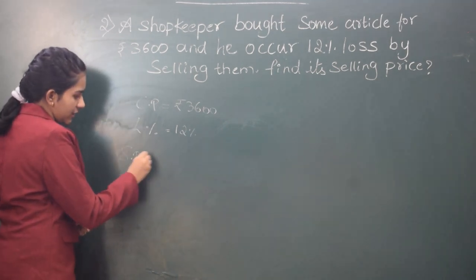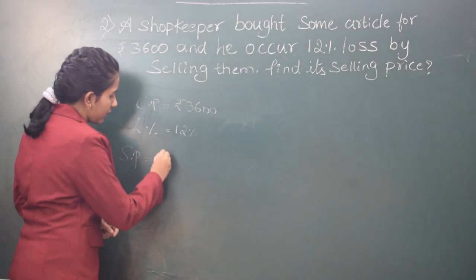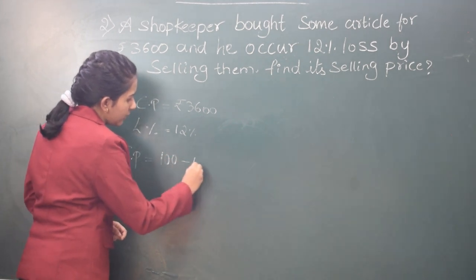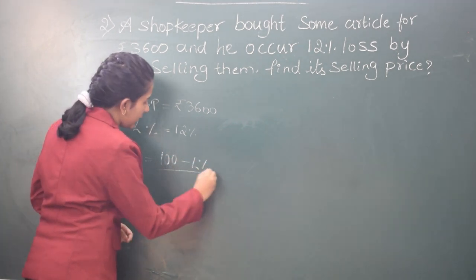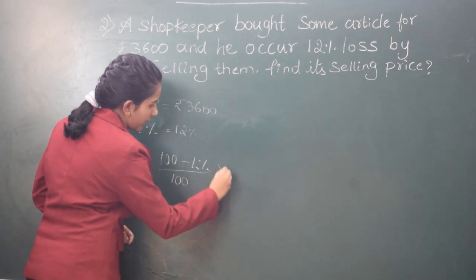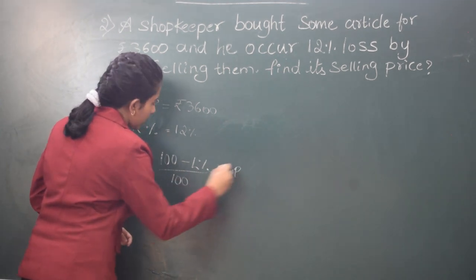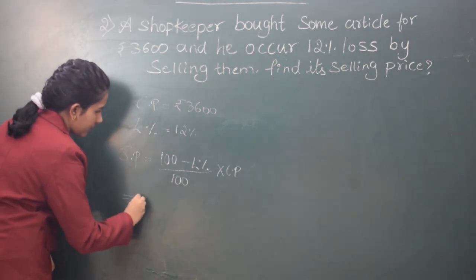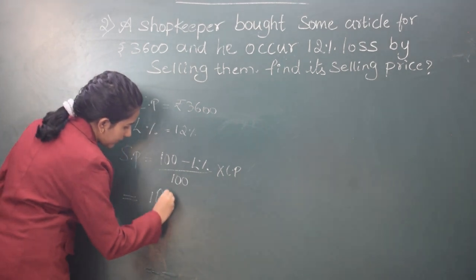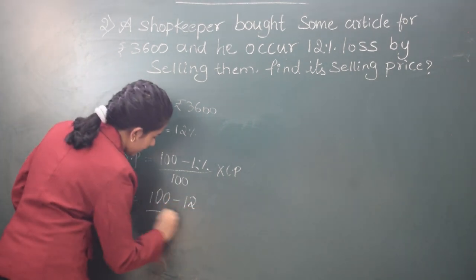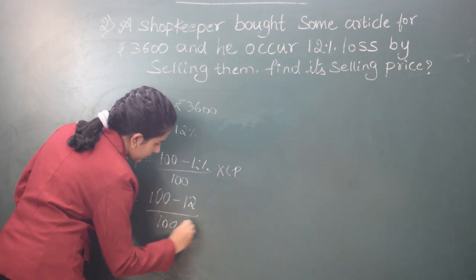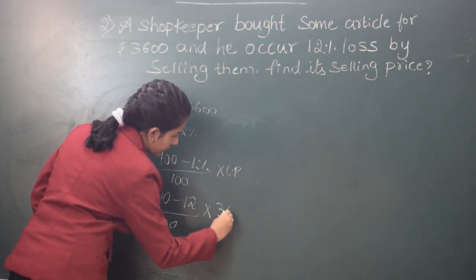So selling price, as a formula, that is, selling price is equal to 100 minus loss percentage divided by 100 into cost price. So selling price is equal to 100 minus 12 divided by 100 into 3600.